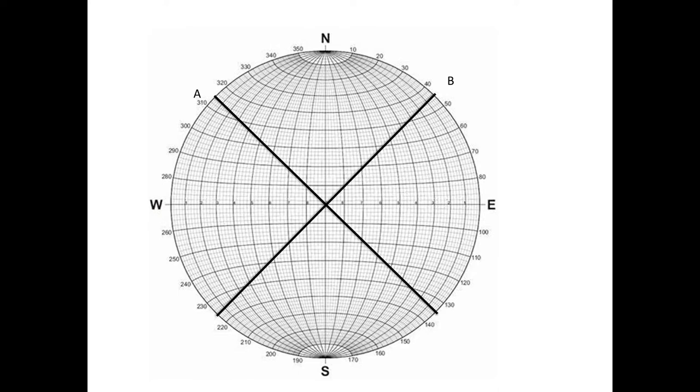These are the numbers called the whole circle bearing, and these values are measured only from the north pole direction.